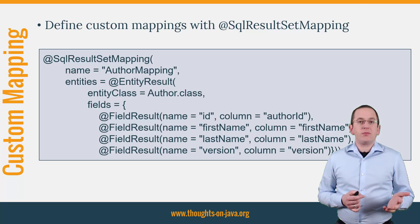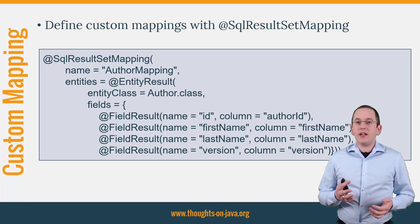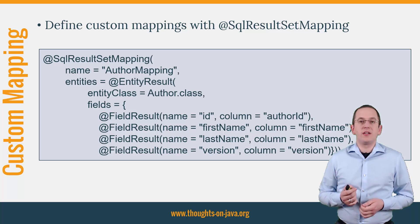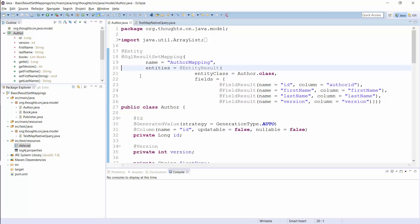You can define a custom mapping with the SQLResultSetMapping annotation. You can see an example here on the slide. The mapping consists of a name and an EntityResult annotation which defines the mapping of the entity. Let's have a more detailed look at it in the IDE. Here you can see the same SQLResultSetMapping as I showed you on the slide. It consists of a name and an EntityResult definition. I will use the name of the mapping later to tell the EntityManager which mapping it shall use.